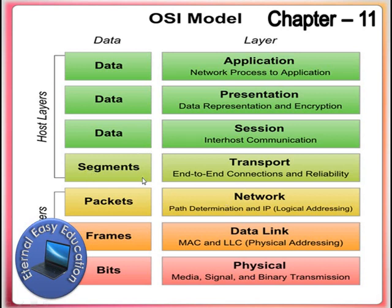In the Transport layer, the segment handles end-to-end connections and reliability. The segment is then converted to data in the Session layer, which manages host communication. In the Presentation layer, data representation and encryption occur. Finally, in the Application layer, the network process delivers the original data to the respective application.